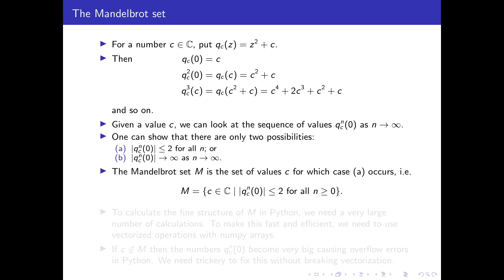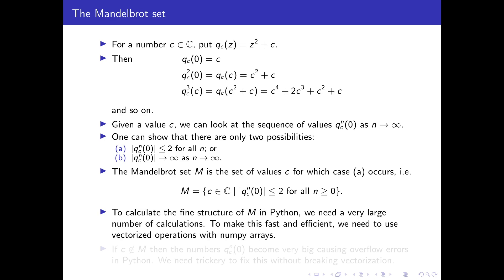Given any C, we ask: which values of C give possibility A (bounded), and which give possibility B (divergent)? The set of values C for which case A occurs is the Mandelbrot set. We want to calculate this set in Python — write code that makes a picture of the Mandelbrot set. This requires a large number of calculations over a fine grid of points, so we need to use vectorized operations and universal functions in NumPy to make it fast.